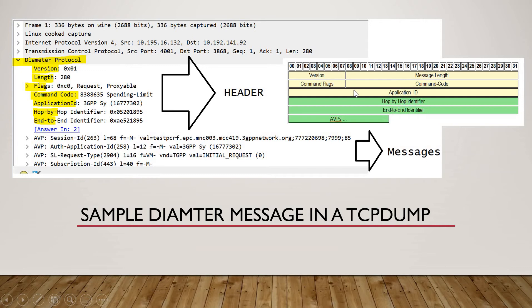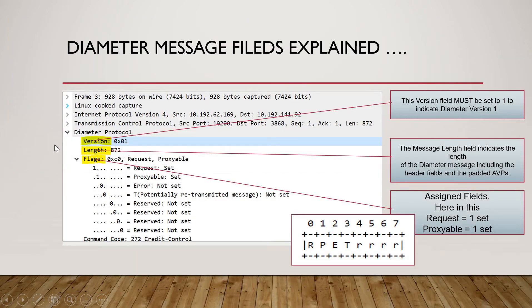You can see the yellow highlighted part. I have compared it with the diameter protocol structure, diameter packet structure basically. This is the version, what is the value inside the version, then what is the length of this diameter message, then the flags which we are using, then the command code, application ID, hop-by-hop identifier and end-to-end identifier, and below is the AVPs which we will discuss later on.